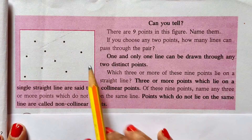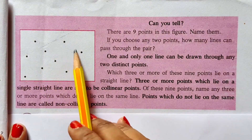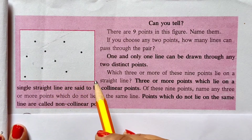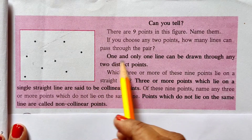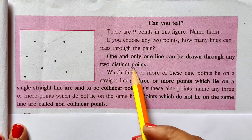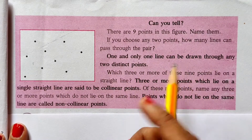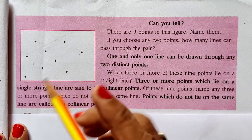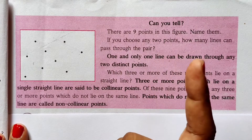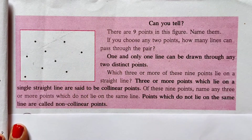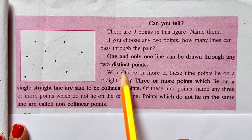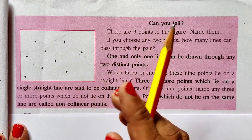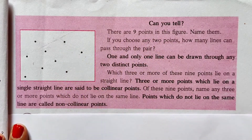Now let us see the next concept. We can see a pattern of dots here. One and only one line can be drawn through any two distinct points. If I take any two points and want to draw a line passing through them, I can draw only one line. I cannot draw two lines passing through the same two distinct points.